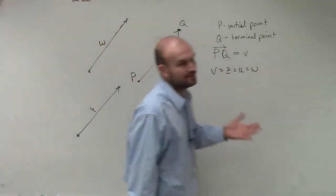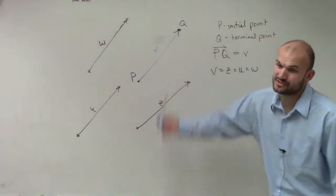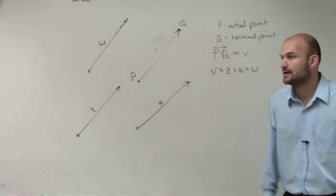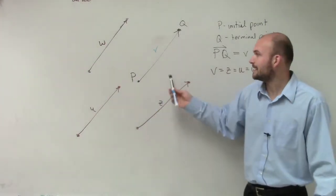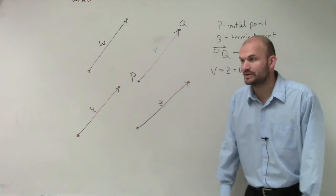So far, what we've talked about is we've looked at the vectors and say all right, all these vectors, they're equal to each other. We know that. But you can see that they all have different names, and they all have different initial and terminal points.